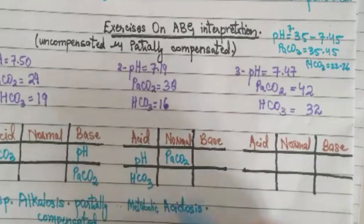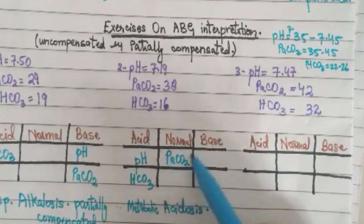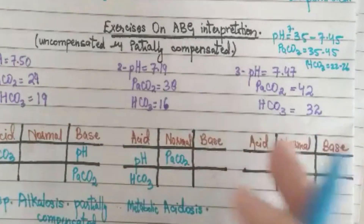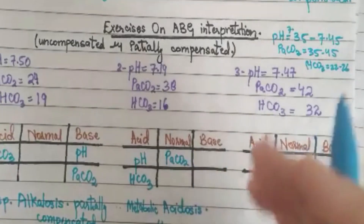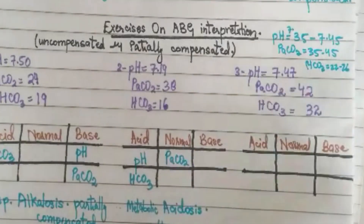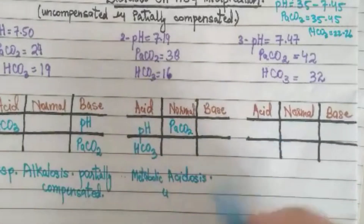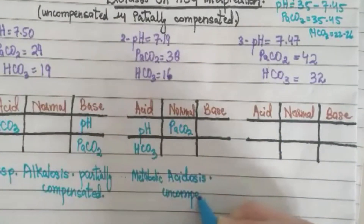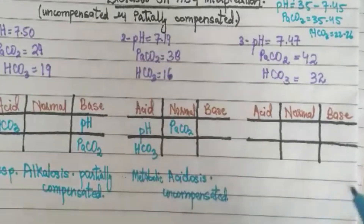Because the pCO2 is not on the base side — it is in the normal range — the condition is uncompensated metabolic acidosis. If the other parameter were on the base side it would be partially compensated, but since it is normal, it is uncompensated. This is how we distinguish partially compensated from uncompensated.